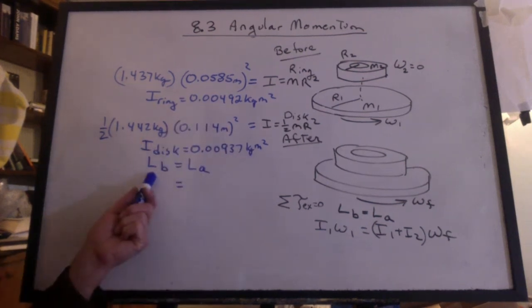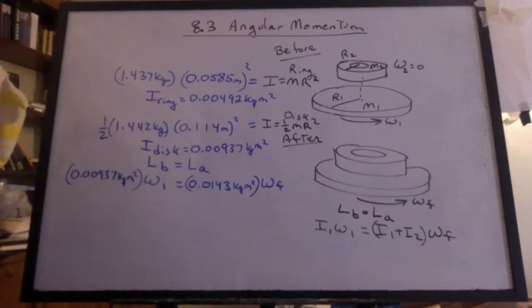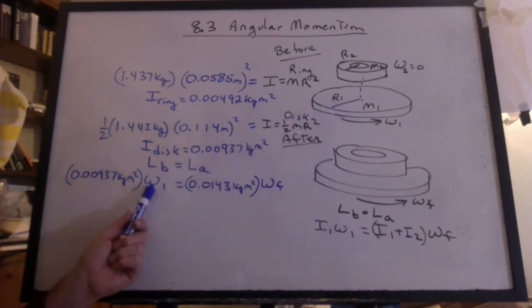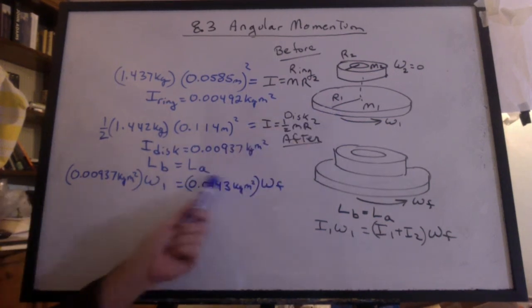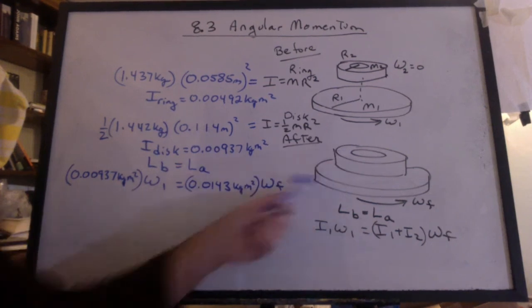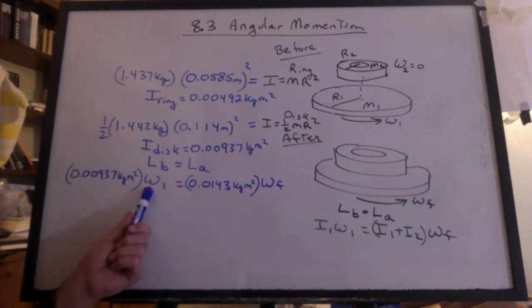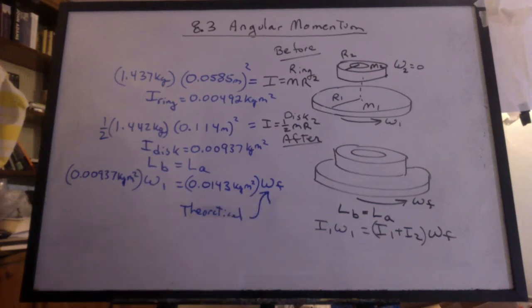And now we'll say the angular momentum before equals the angular momentum after. We have it all set up here. So I have the inertia of the disk. That's down here. Times the initial angular velocity of that disk equals, well, where did that number come from? It's both of these added up. So it's the inertia of both the ring and the disk together times the final angular velocity. You're going to measure this angular velocity in slow motion. And then you can calculate the omega final. That'll be your theoretical final angular velocity.